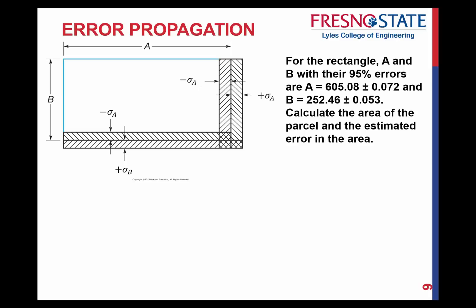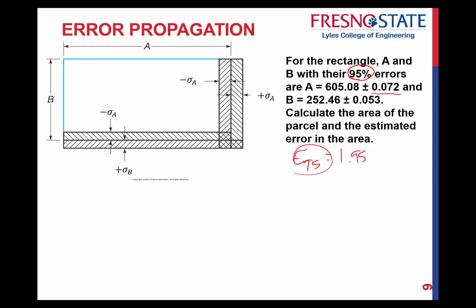Let's apply this with an example. For a rectangle, A and B are given with their 95% errors: A is equal to 605.08 plus or minus 0.072, and B is 252.46 plus or minus 0.053. Make sure you understand that these are 95% errors. The 0.072 is the 95% error, where E95 equals 1.9599 times the standard deviation. So 0.072 equals 1.9599 times the standard deviation — you can calculate the standard deviation from that. This is not the standard deviation itself, it's the 95% error.